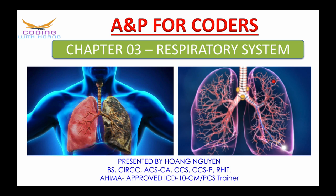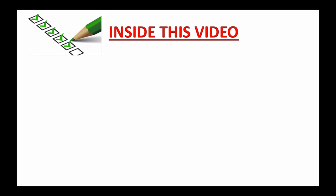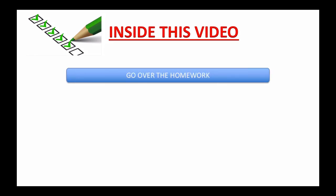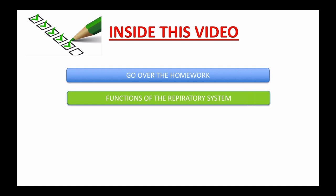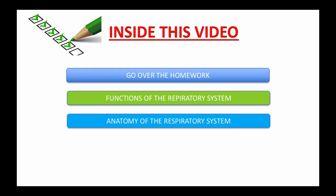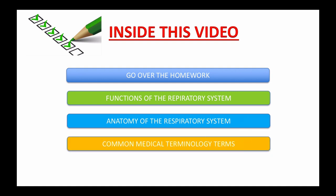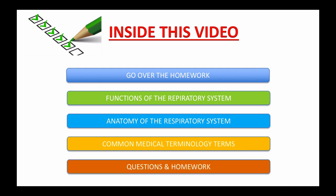Today's topic is anatomy and physiology for coders in 2021, chapter 3: the respiratory system. All right, without further ado, let's get started. Inside this video, first I will go over the homework that I gave you last week, then I'll tell you the function of the respiratory system. Next I will show you the anatomy of the respiratory system, then some common medical terminology terms related to this system. And last, we will do a knowledge assessment question, and as usual I will also give you a homework assignment at the end of the video to reinforce what you learned today.